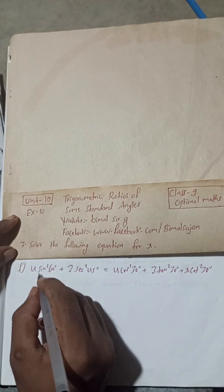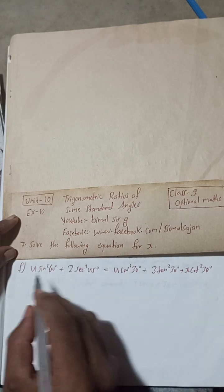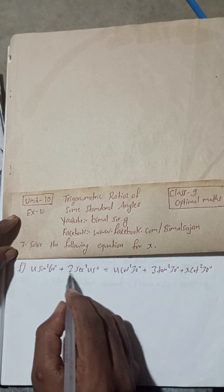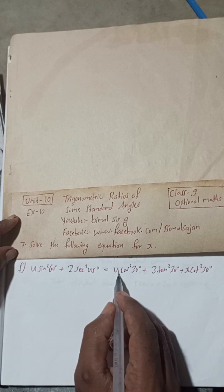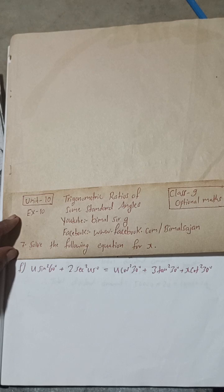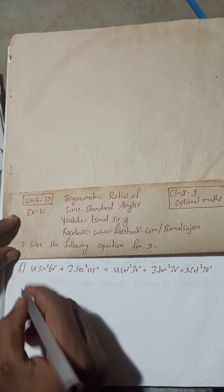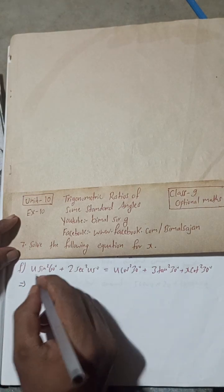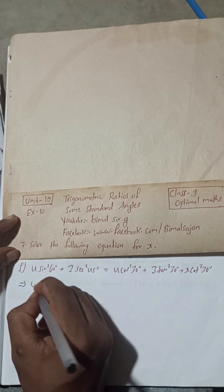Now, solve the following equation for x: 4sin²60° + 2sec²45° = 4cos²30° + 3tan²30° + xcot²30°. This implies, 4 as it is...